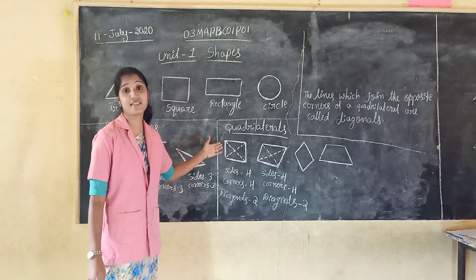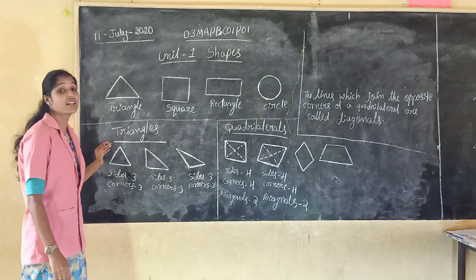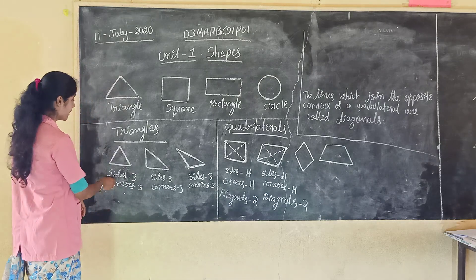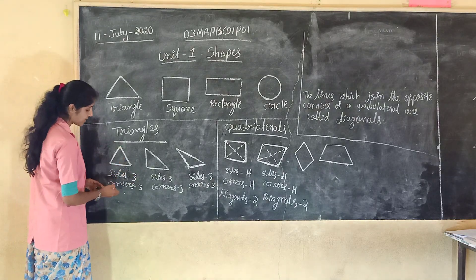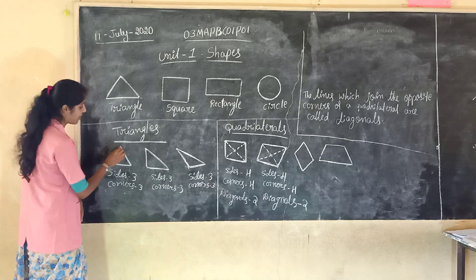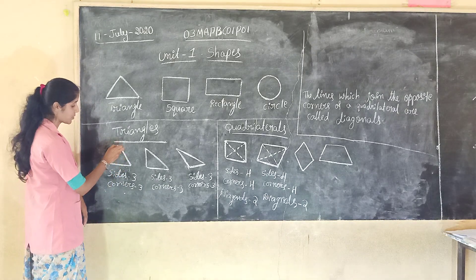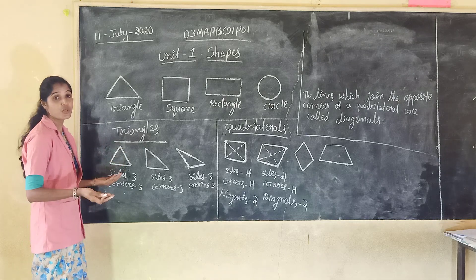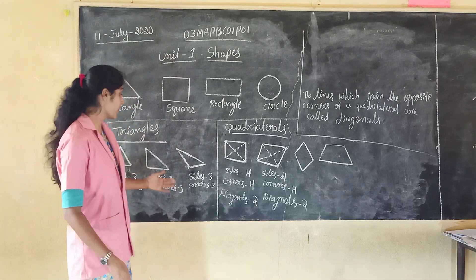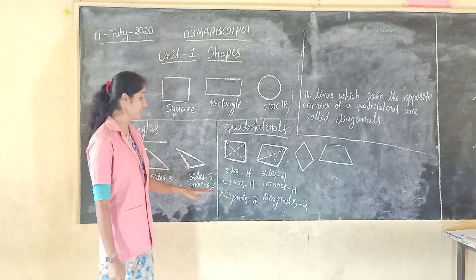In the quadrilateral, diagonals are there. But here, in the triangle, no diagonals — here only sides: three sides. And corners: three. No diagonals, because we cannot draw the line here, as there is no opposite corner. So, no diagonals.